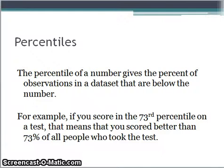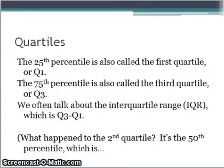When we talk about percentiles, we're talking about the percent of observations that are below that number. So the 73rd percentile on the test would mean that you scored better than 73% of all people who took the test. Keep in mind that that doesn't mean you got 73% of the questions right on the test. The score of 98 out of 100 could be the 73rd percentile.